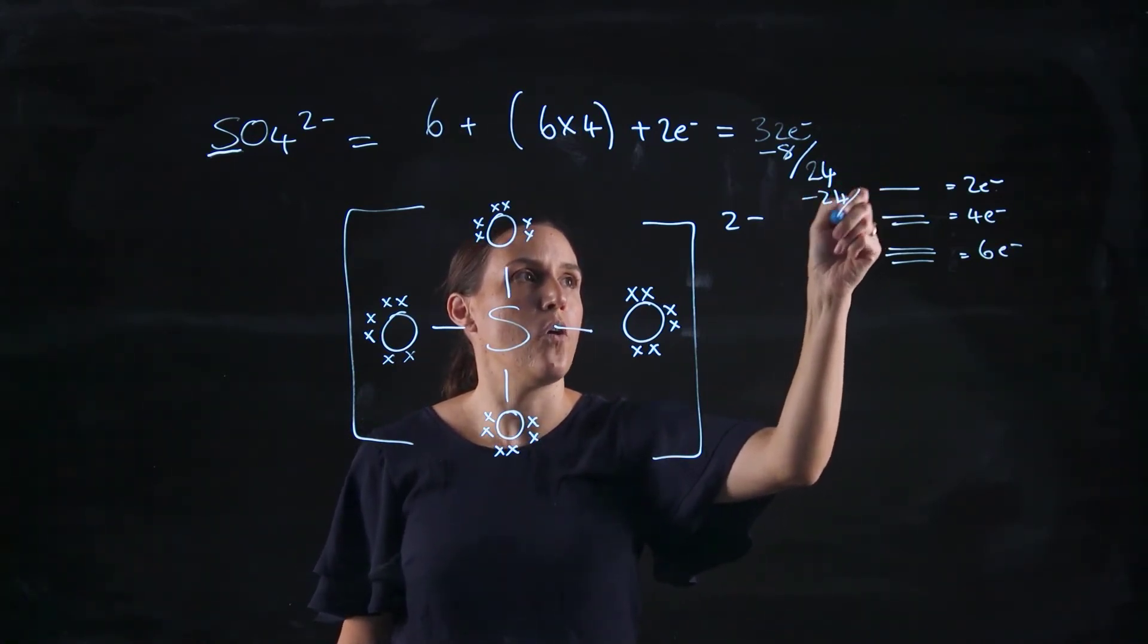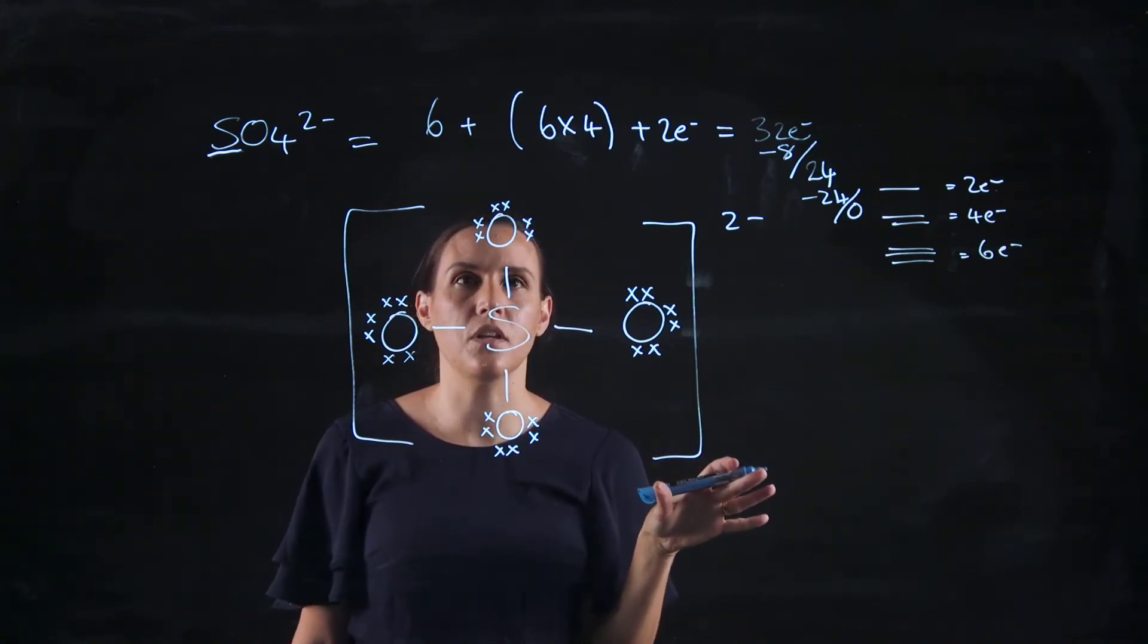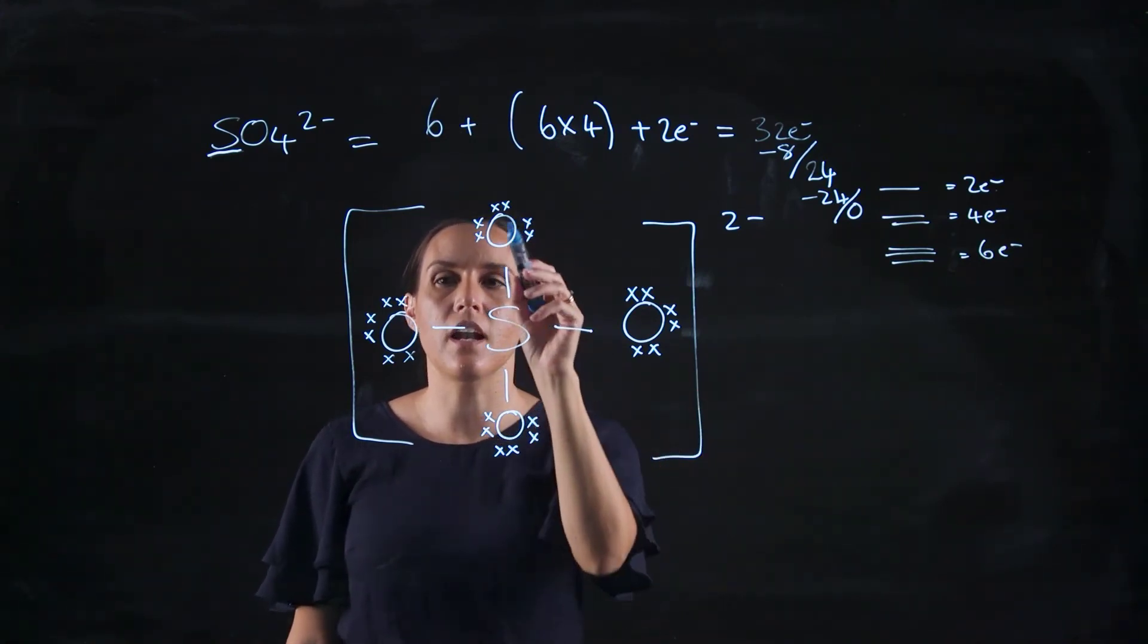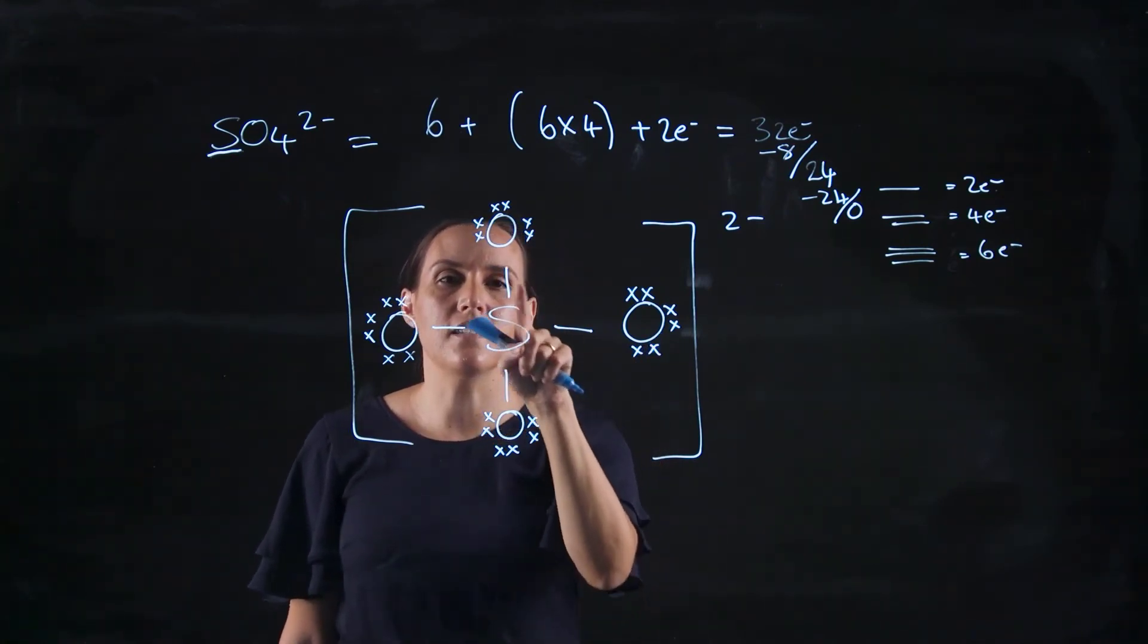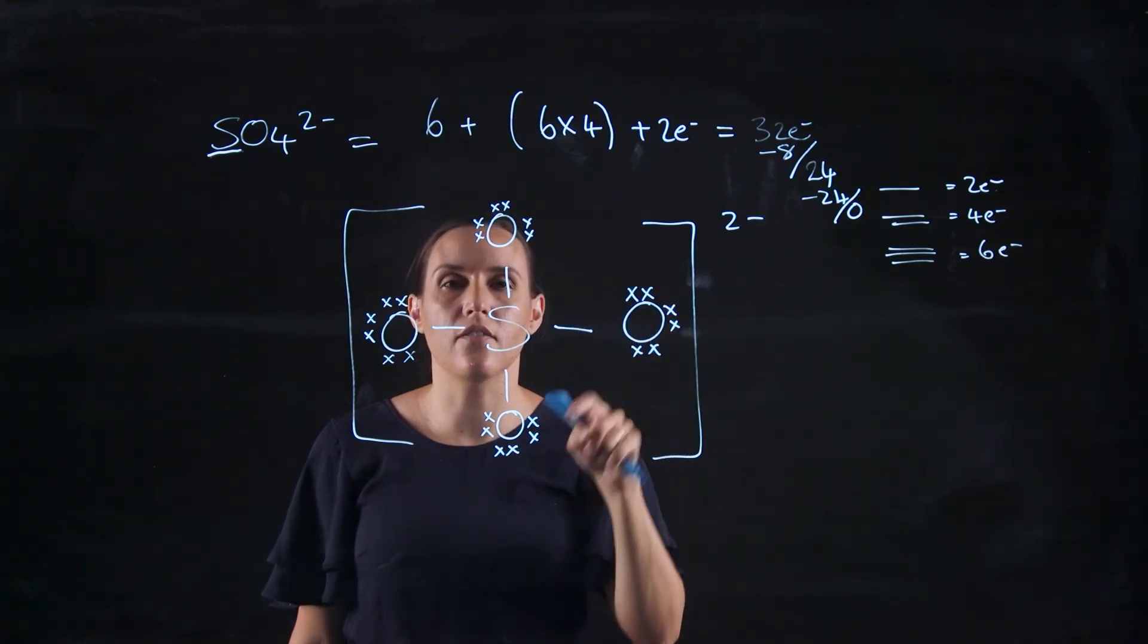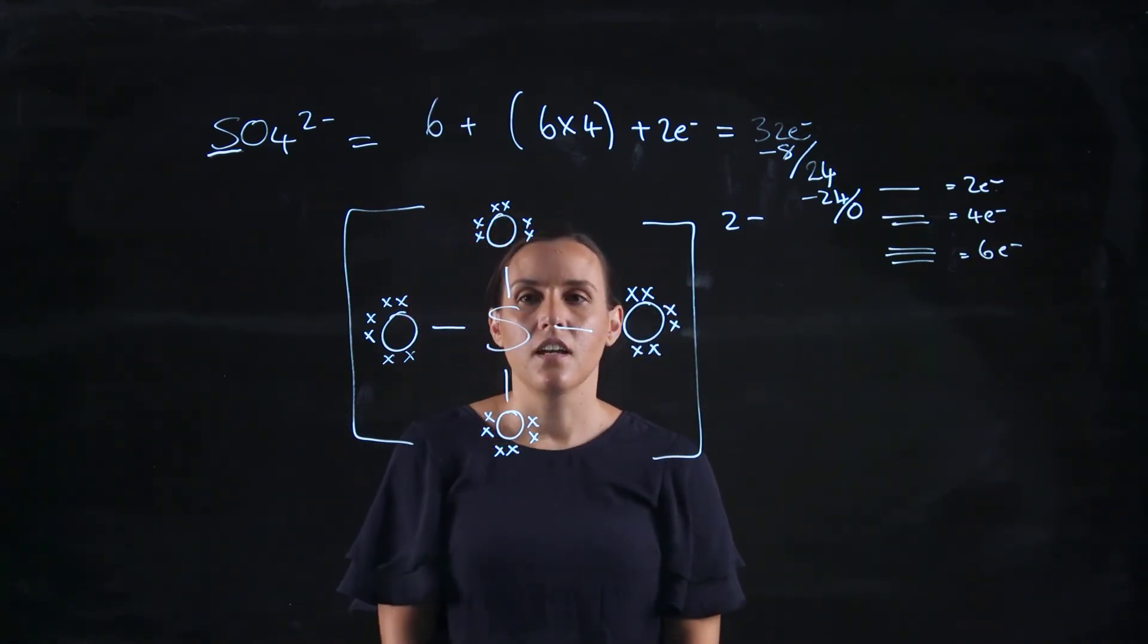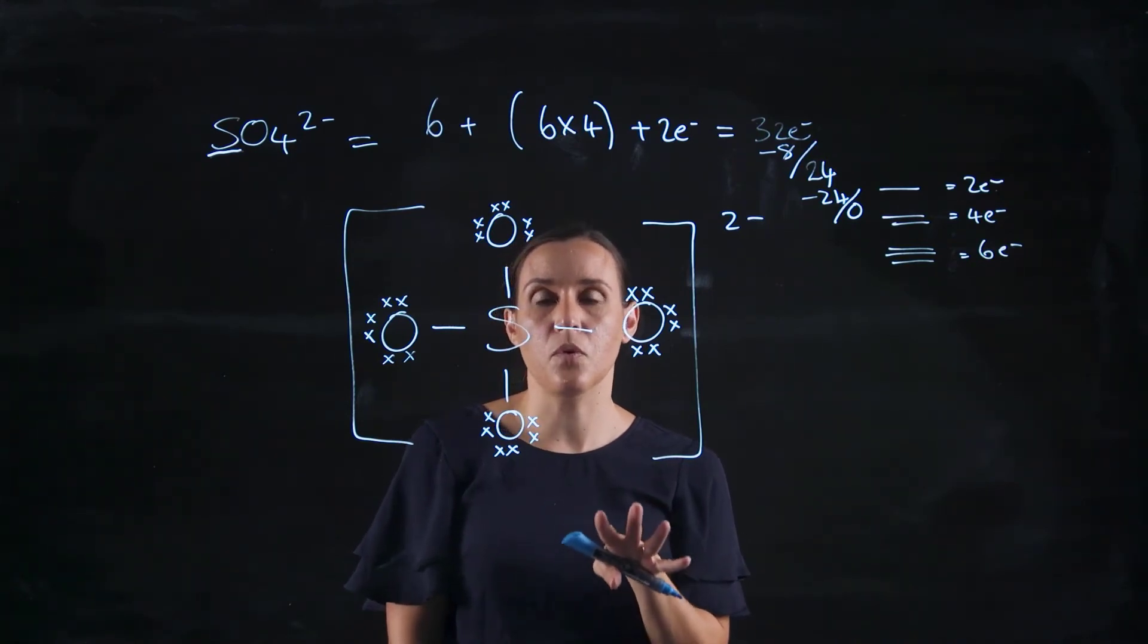So I've used up all of my valence electrons. This is the structure that I end up with. So I've got sulphur in the middle, and I've got four oxygens. Now, sulphur has its 2, 4, 6, 8, and each of these oxygens also have the eight required. Now, not looking at formal charge, this is where you would end up with this structure.